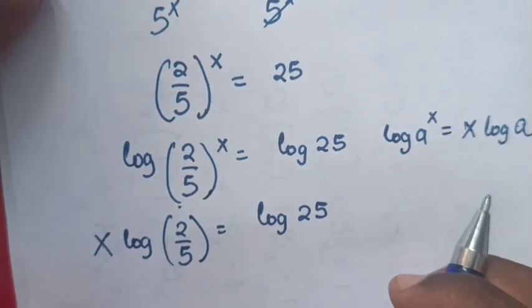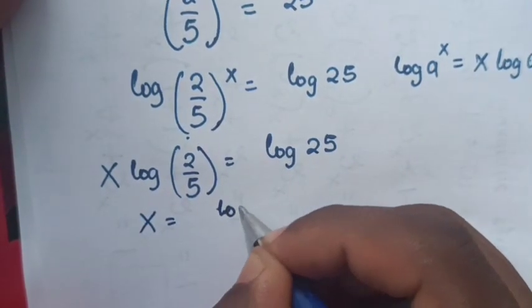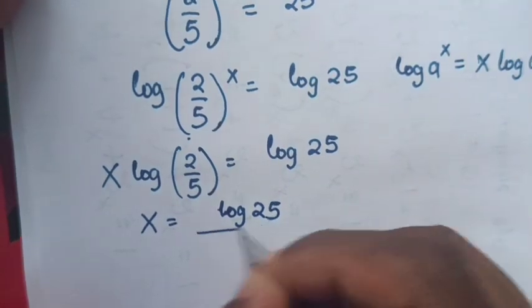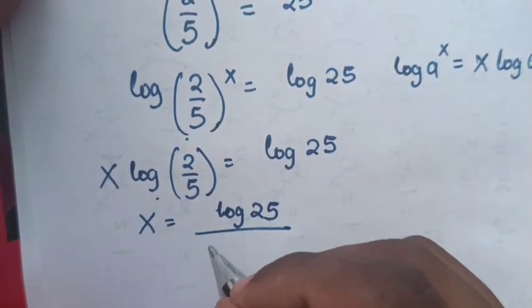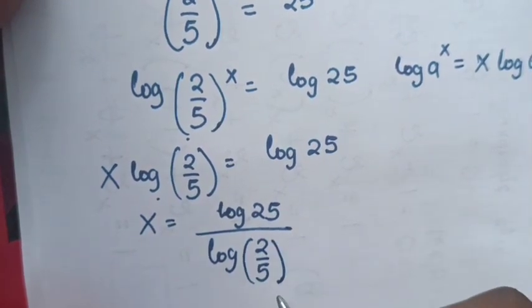Now to find the value of x, we divide by log 2 over 5 on both sides. So it will be x equals log 25 over log 2 over 5.